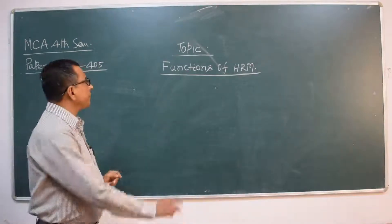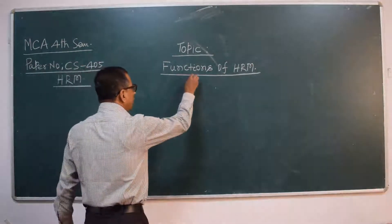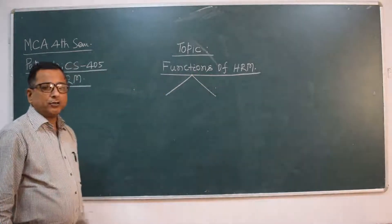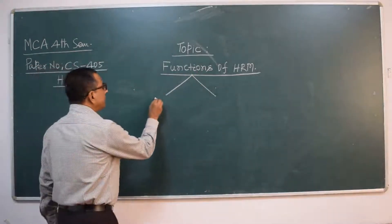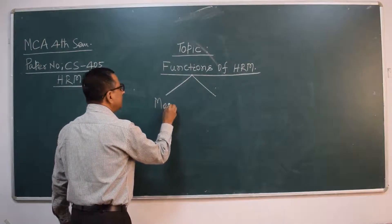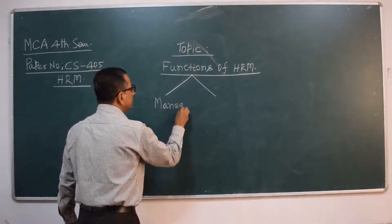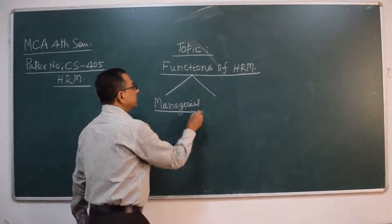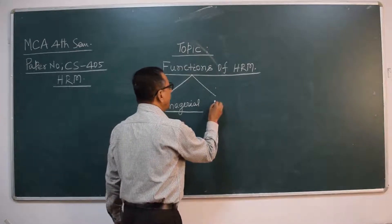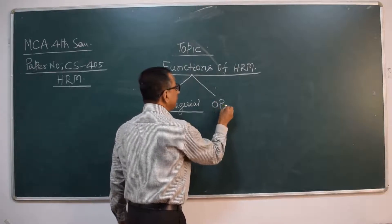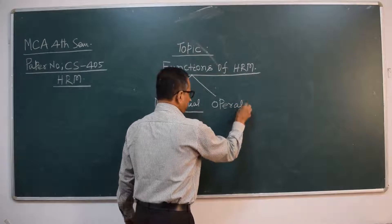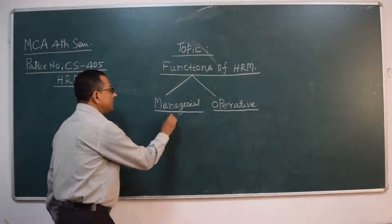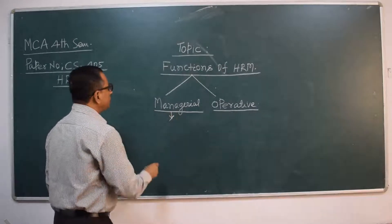By and large, all functions of human resource management have been classified under two categories. The first category is known as managerial functions, and the second classification is known as operative functions.